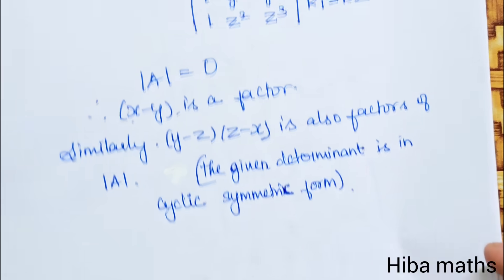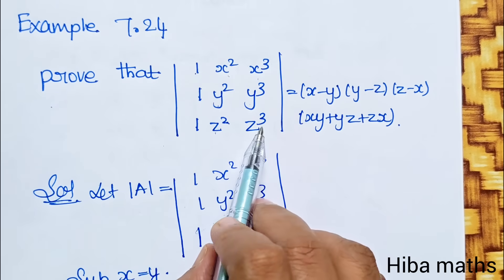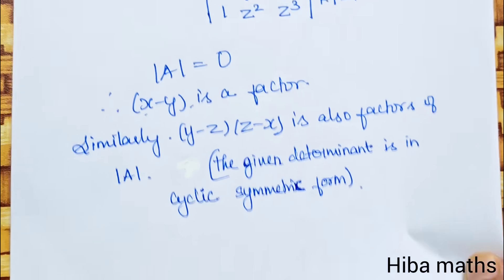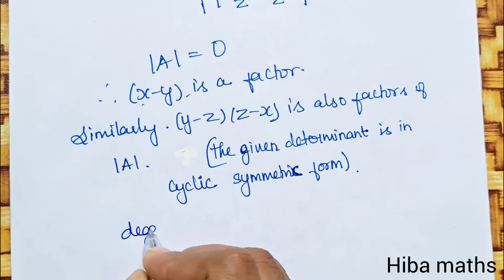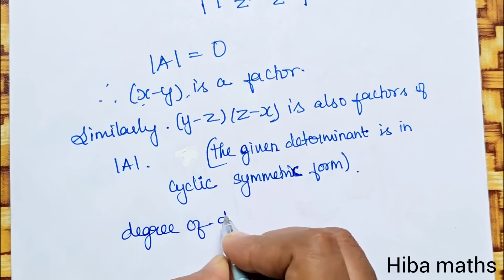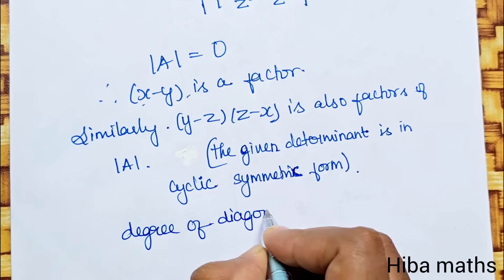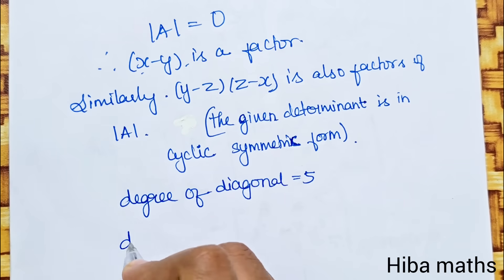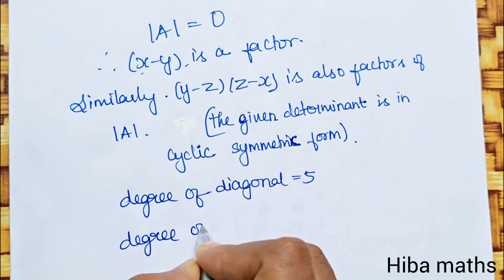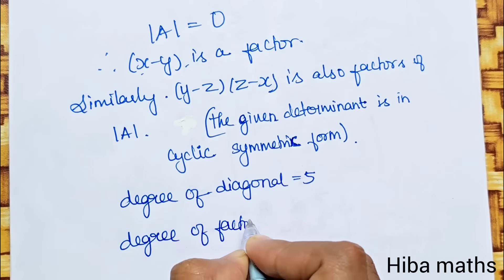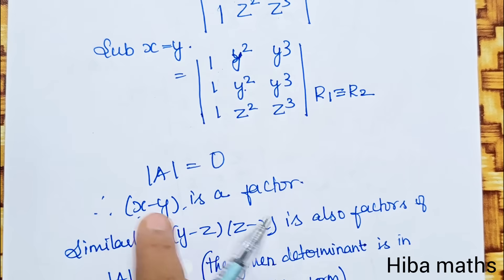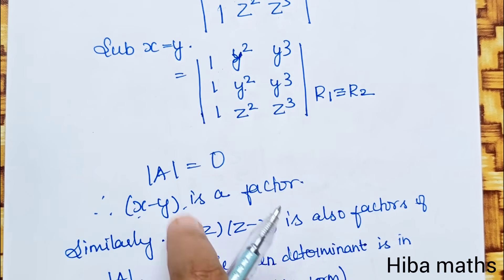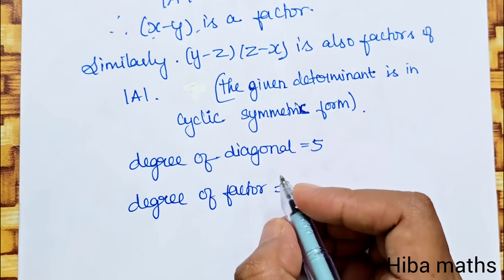Now let us find the degrees of the diagonal. The diagonal entries have degrees 1 and 2 (from x² and x³ terms), giving degree 3+2=5. The three factors (x-y), (y-z), (z-x) each have degree 1, so total factor degree is 3.